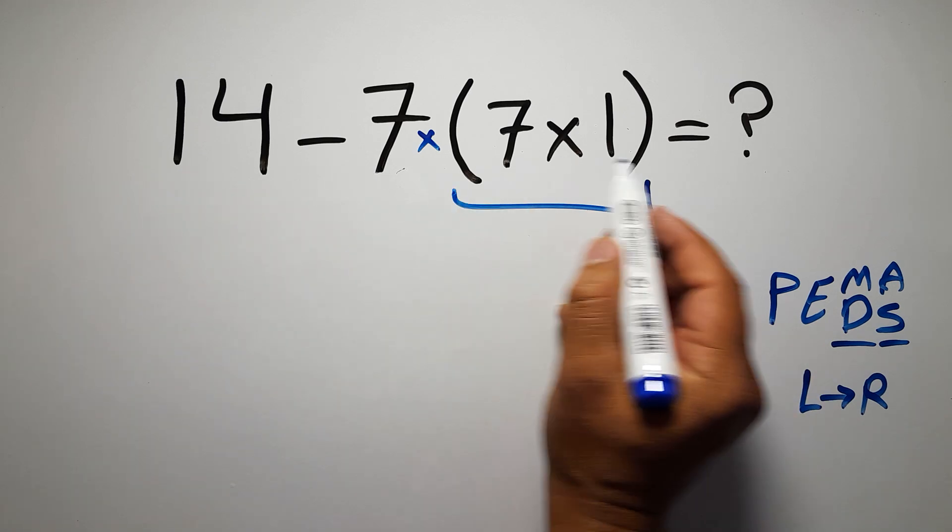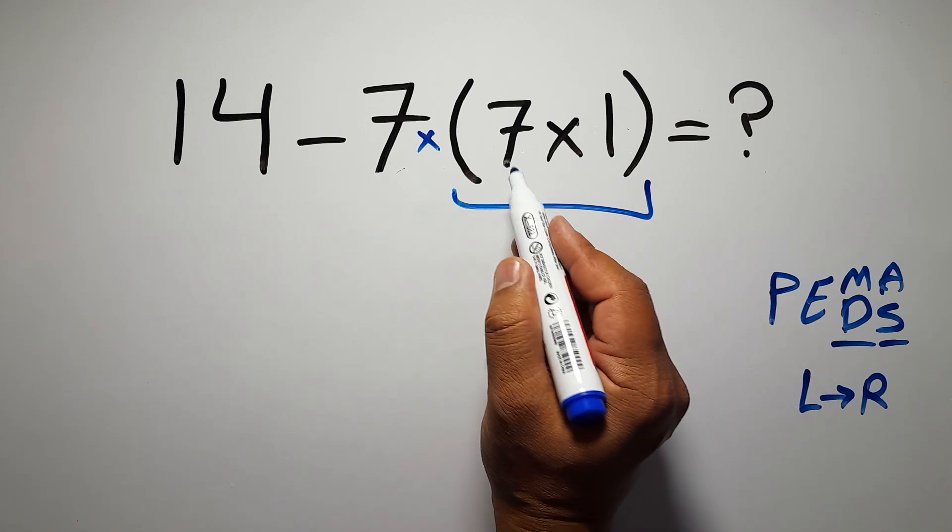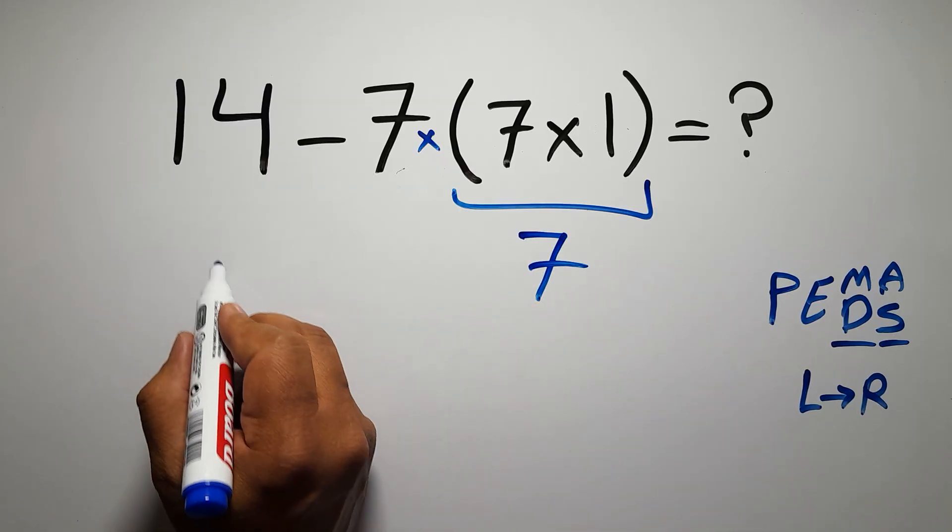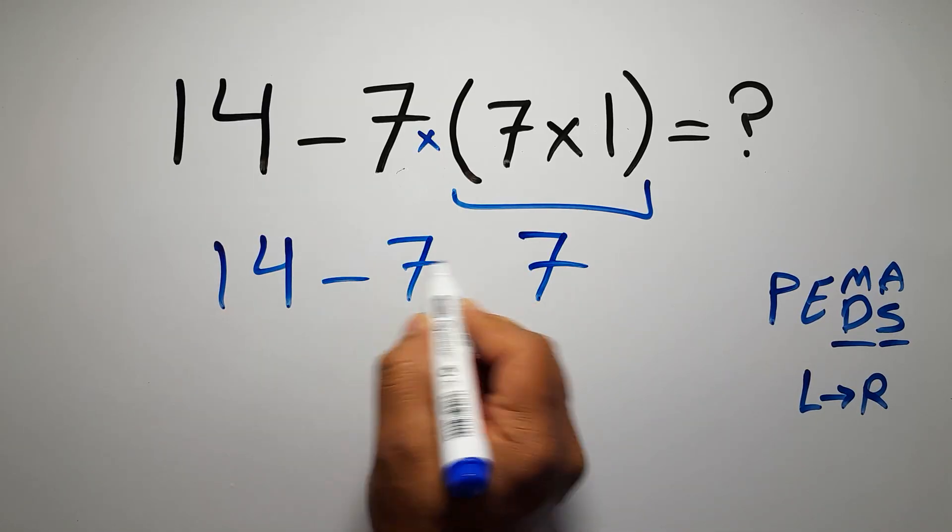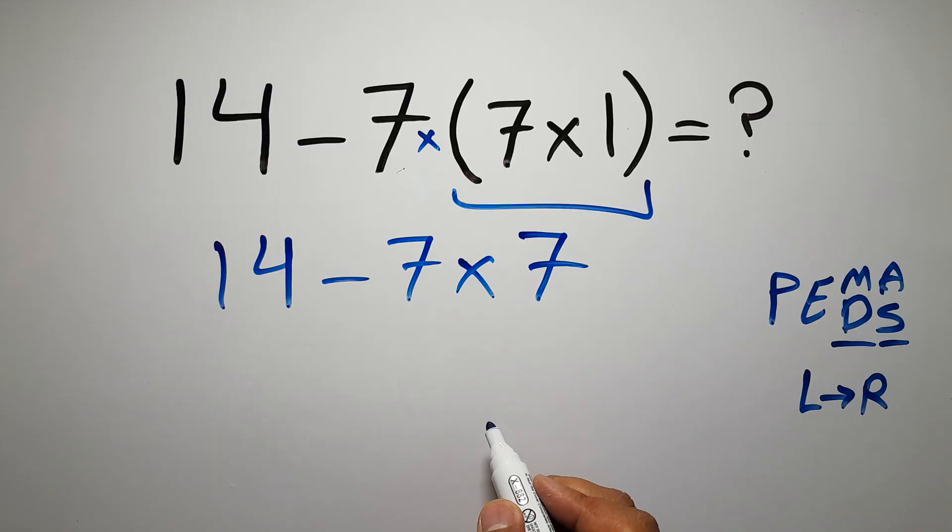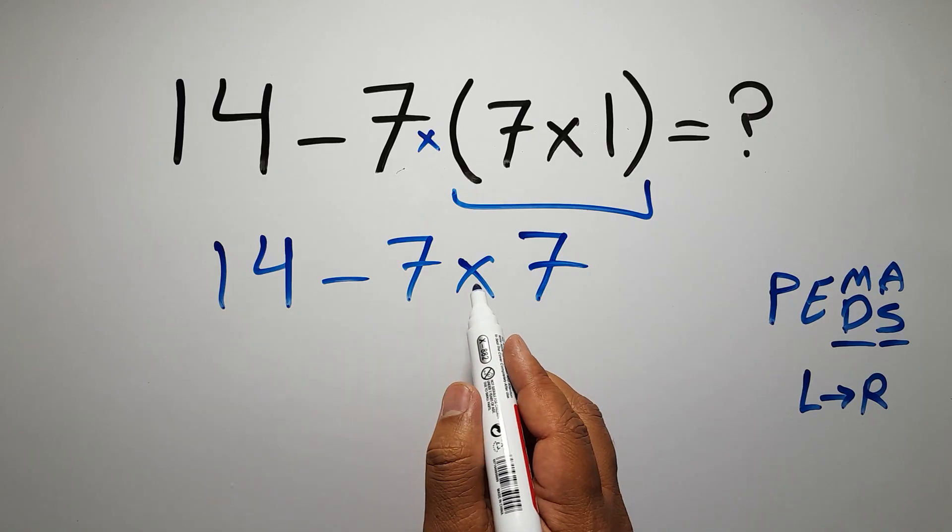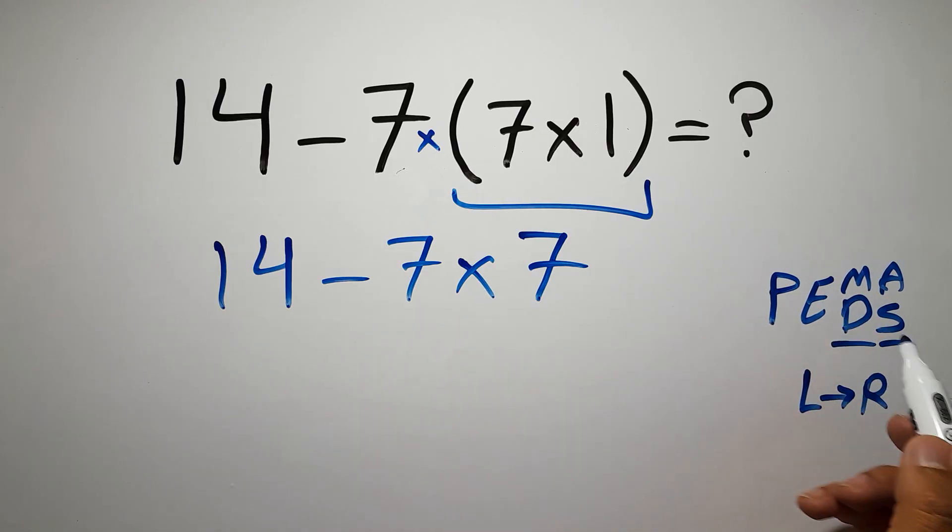So first this parentheses. Inside this parentheses we have 7 times 1 which equals 7. So 14 minus 7 times 7. Now we have to do this multiplication, not this subtraction. According to PEMDAS, multiplication comes before subtraction.